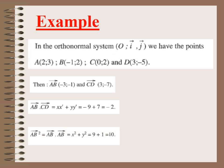We can also compute AB squared. AB squared equals AB·AB, where I multiply the components of AB by themselves.